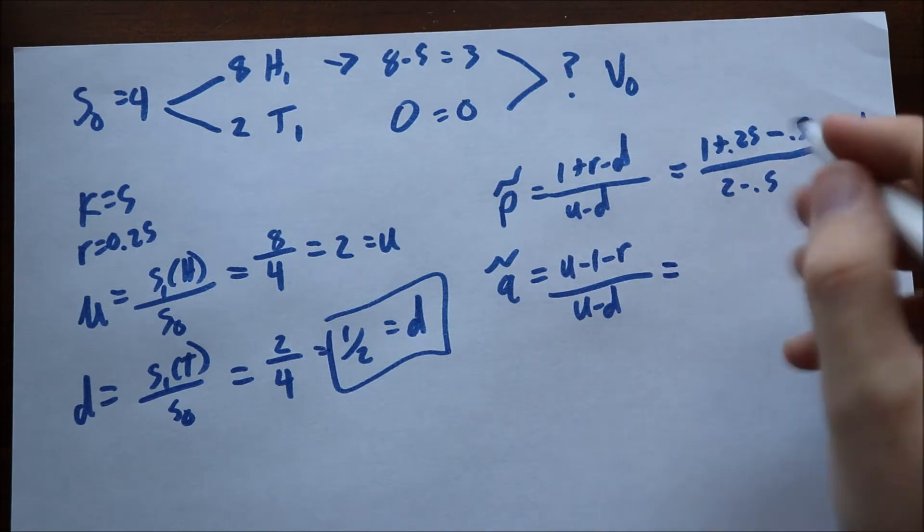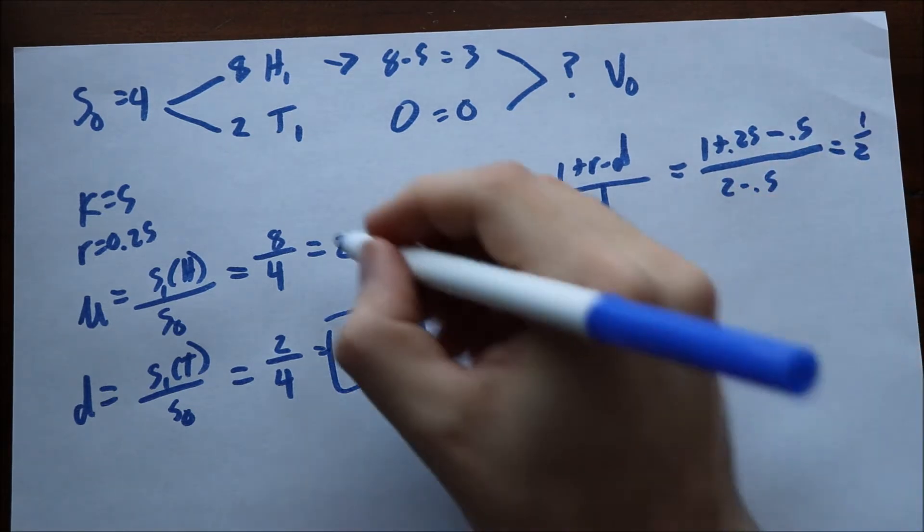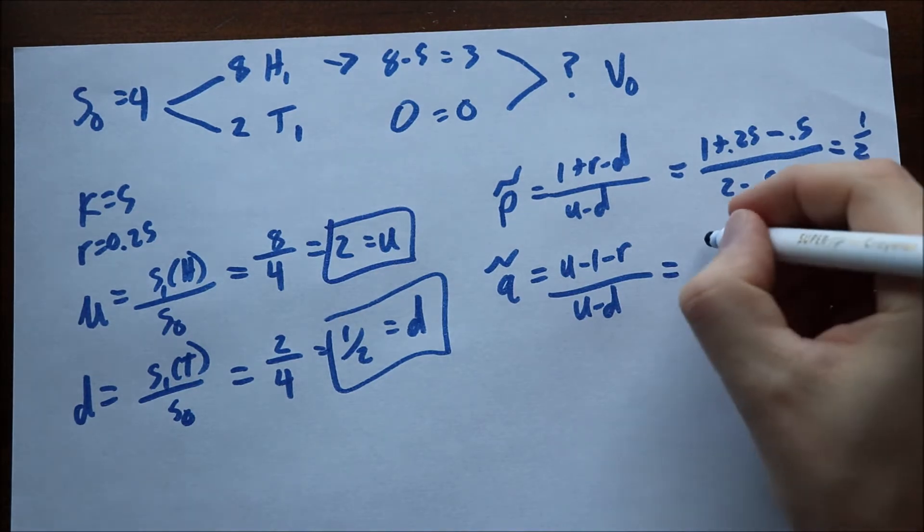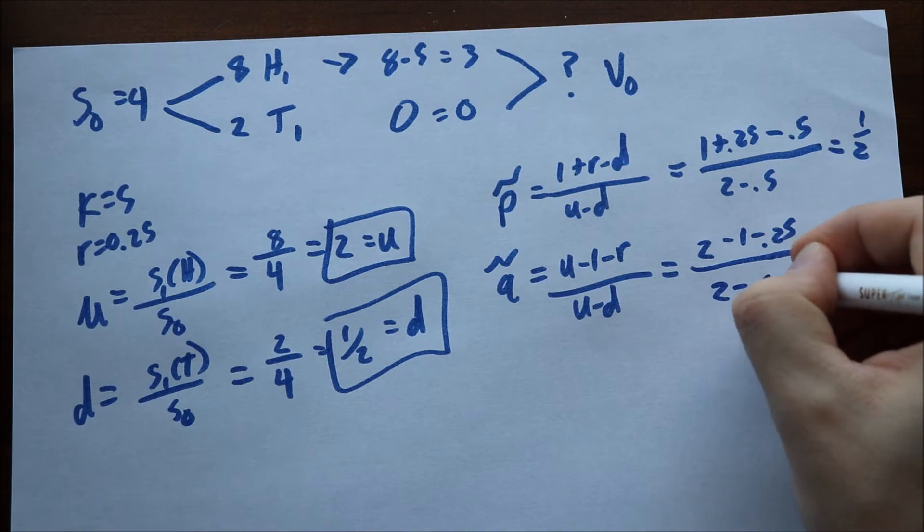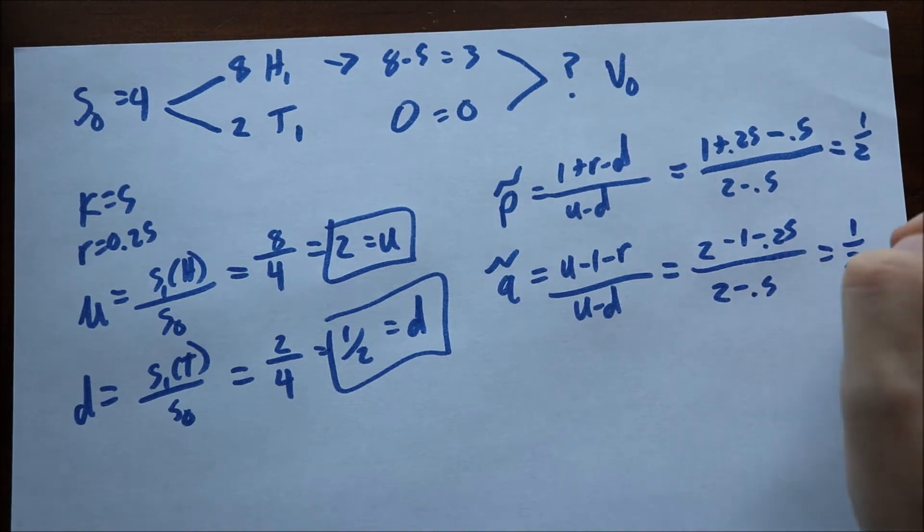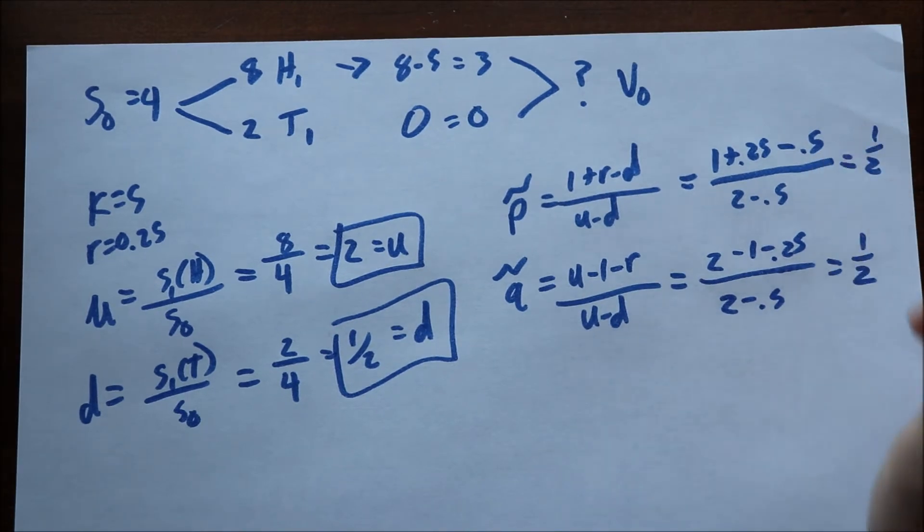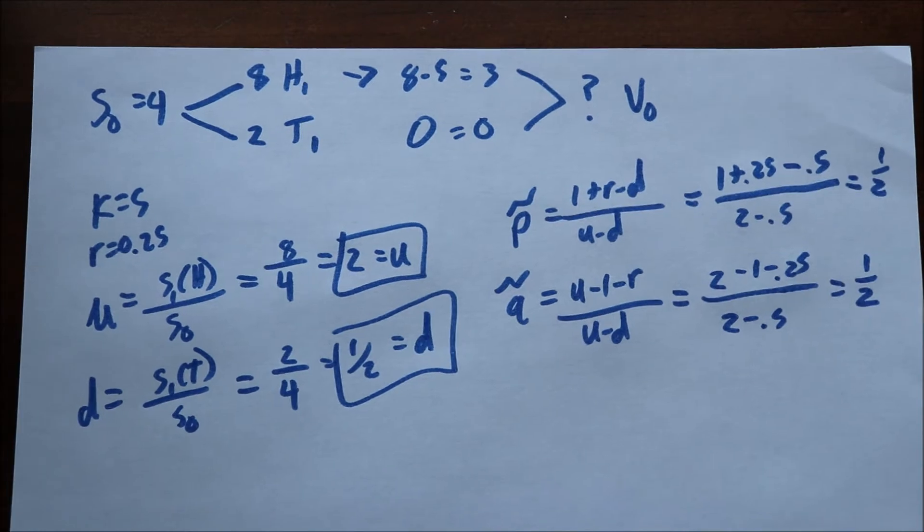If you do the exact same equation here, Q tilde is equal to U minus 1 minus R over U minus D. This is 2 minus 1 minus 0.25 divided by 2 minus 0.5. And this again will give you 1 half. These will sum to 1 because there are probabilities of both up and down. So they should always sum to 1, which is just the basic principles of probability.